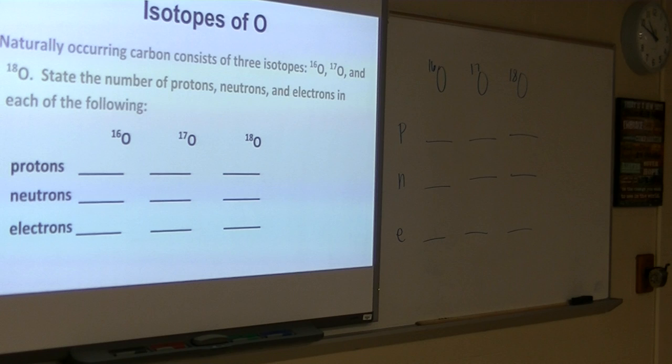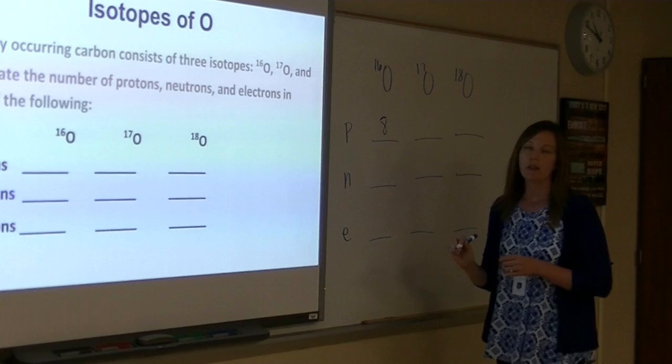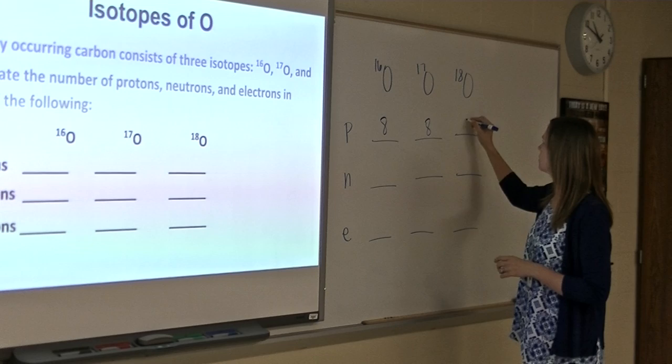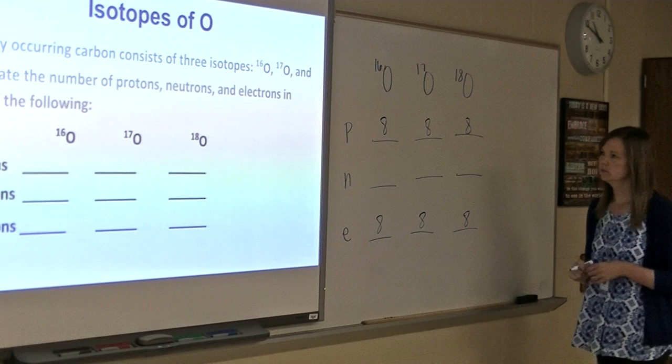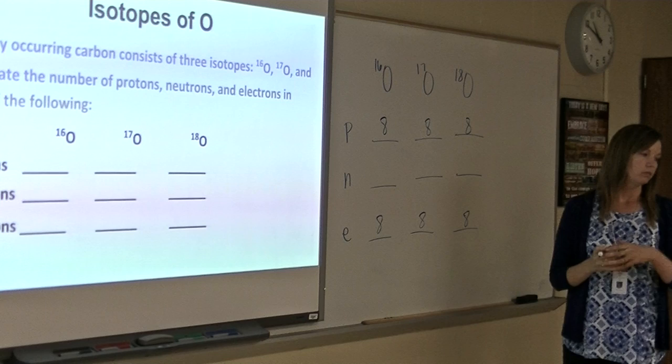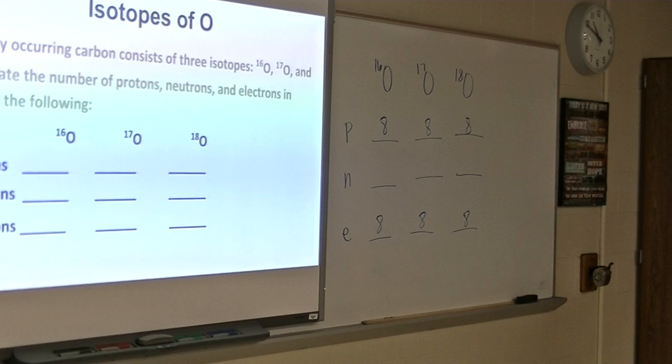What is the atomic number for oxygen? Eight. Everyone see oxygen is number eight. So how many protons does oxygen have? Eight. Because that's our atomic number. Now, atomic number doesn't change, so all the way across here all three of these isotopes are going to have eight protons, and all the way across we're also going to have eight electrons, right? So the protons and electrons are the same.